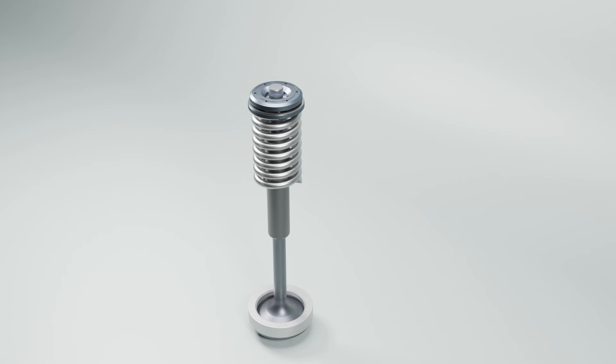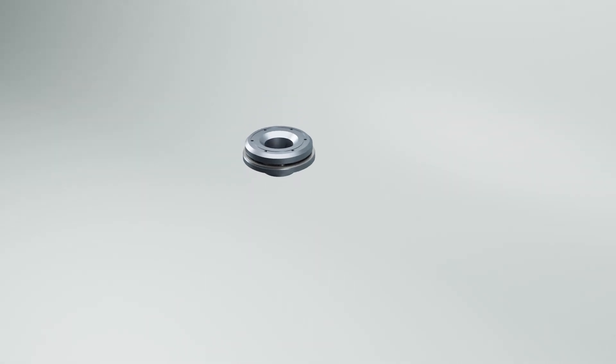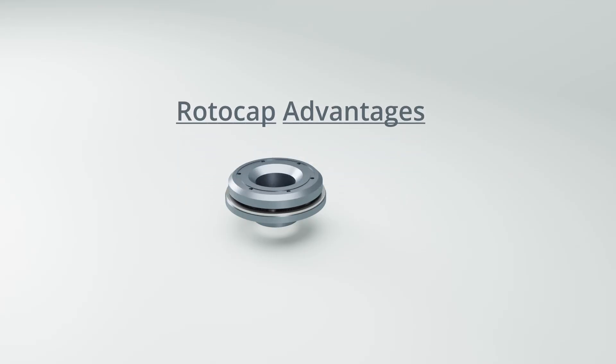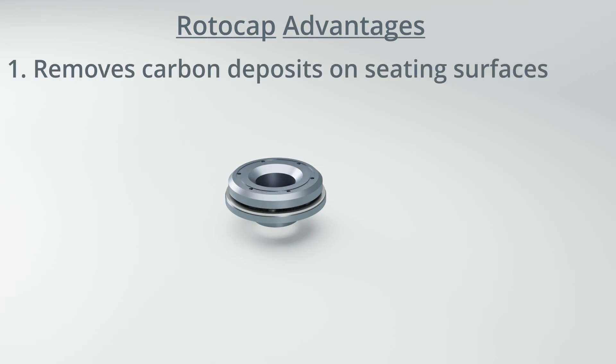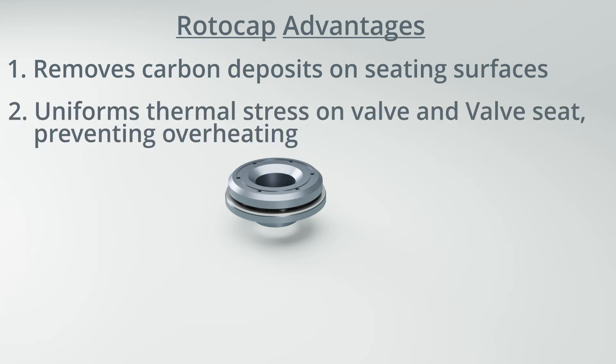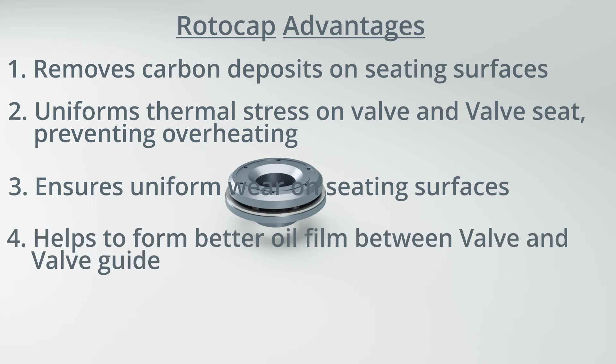Before we understand how rotocap works, let's look at the advantages of having a rotocap. Rotating the valve removes carbon deposits on seating surfaces that may be formed during running of the engine, uniforms thermal stresses on components due to non-symmetrical gas flow in the cylinder, ensures uniform wear on seating surfaces, which in turn reduces the leaks from intake and exhaust valves leading to drop in efficiency, and helps to form oil film better between valve and valve guide, aiding lubrication.